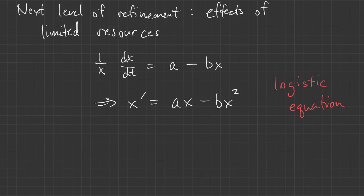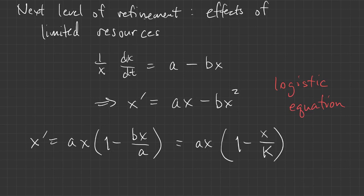We're going to write this in a different form. It's a little bit more convenient in some ways. We factor an ax out of both terms. And then we'll rename the ratio a over b to be capital K. K is an important constant known as the carrying capacity. So both a and K are assumed to be positive parameters.